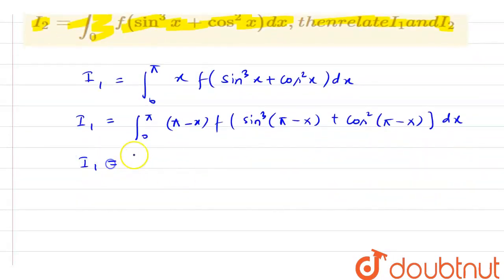Now, here I have i1, 0 to pi, and we have pi minus x into f. Now sin pi minus x is sin cube x. Cos pi minus x is minus cos x, but due to positive index, I can write it as cos square x dx.